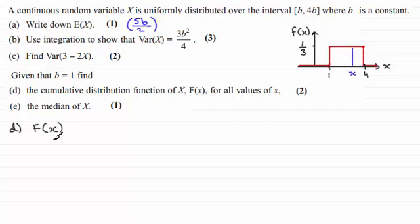Then F of X, remember, gives us the probability of being less than or equal to this value X, which is represented by the area to the left. And this is a nice simple geometrical shape, that of a rectangle. So for that area, that's going to be equal to the height, which is 1 third, multiplied by the width, which will be X minus 1.